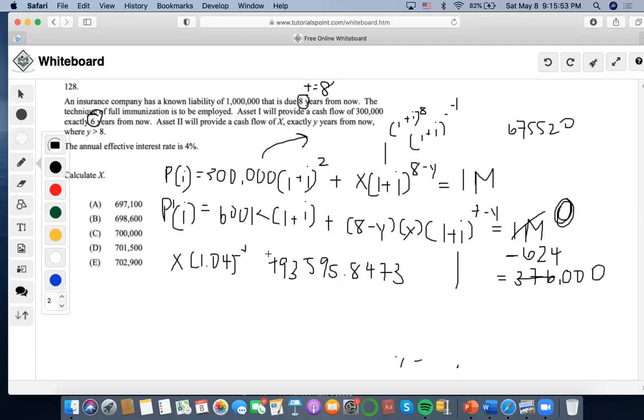So now, this is gonna start looking like this whole thing will consist of this times e minus 1 times 1 plus i to the 7, which is 1.31. Now, I'm going to take this value and multiply it by 493,595.8473, and you get 649,538.